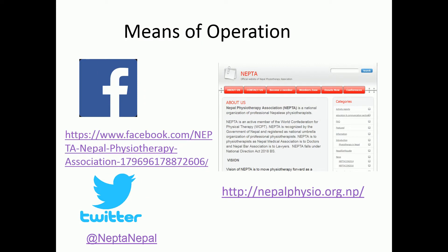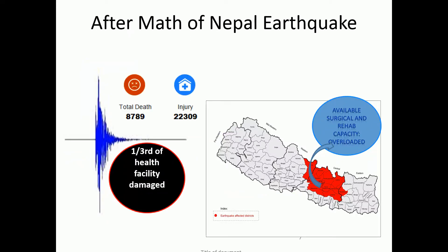We are a group of physiotherapists as executives of the association and we do it voluntarily — we have no staff; all our work is voluntary. In this scenario, we use Facebook, Twitter, and our website to connect with our stakeholders and member physiotherapists. April 25th, 2015 was a catastrophic day in the history of Nepal. We had an earthquake of 7.9 magnitude, causing the death of almost 9,000 people and injury to around 22,000 people. Almost one-third of the health facilities were damaged.